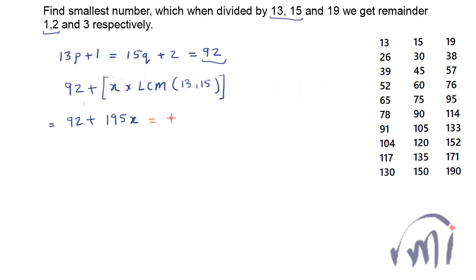So 13 multiplied by 15 is 195 and any multiple of this LCM when added to 92 will satisfy this particular condition. So the number which we are actually talking about is of this form and this is also the number in the form of 19 multiplied by y plus 3. Because this number when gets divided by 19 you are getting remainder as 3.